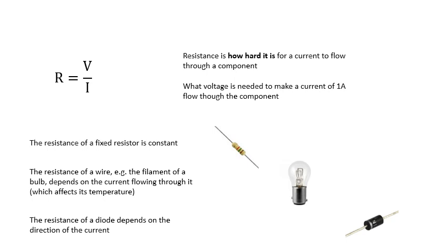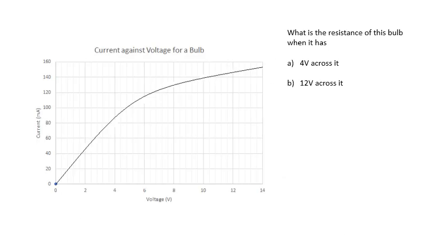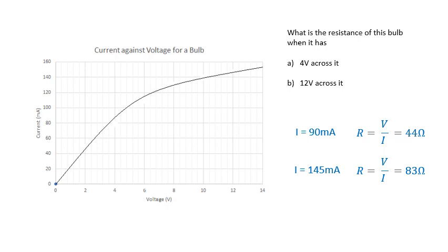The resistance of a wire — for example the filament of a bulb — depends on the current flowing through it, because it depends on temperature: the hotter it is, the harder it is for electrons to flow through. There's also a component called a diode, where resistance depends on the direction of current. R = V/I: get the voltage and the current, voltage divided by current. At any point on the graph, voltage divided by current gives the resistance. Notice that the resistance of the bulb is getting bigger — for the reasons just discussed.